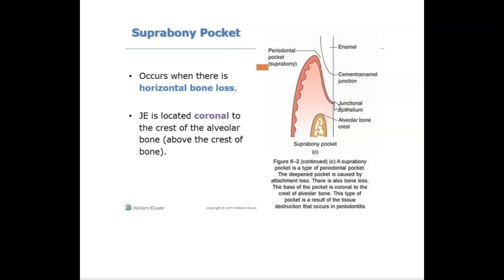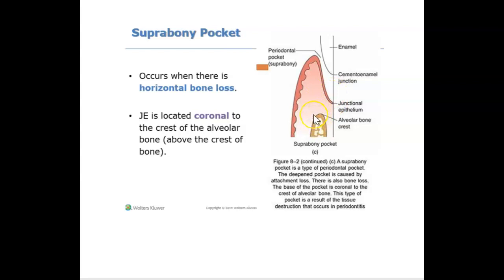What we know about the junctional epithelium is that when we probe the base of the sulcus, the bottom of the probe will always hit the junctional epithelium. If you look at this picture, the junctional epithelium is above or supra to the bone — that's a suprabony pocket. So this could be like a six or seven millimeter pocket, and it's known as a suprabony pocket because the junctional epithelium is above the bone.